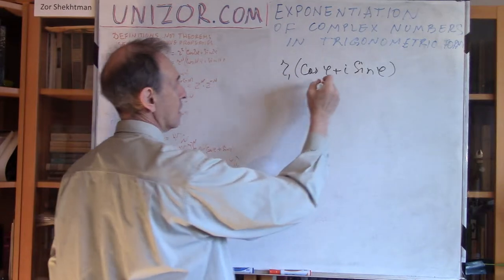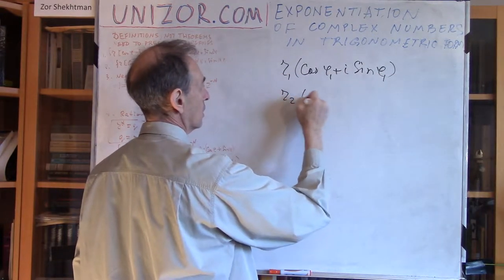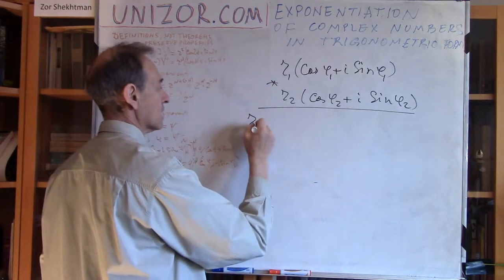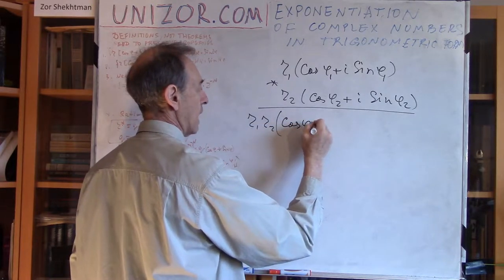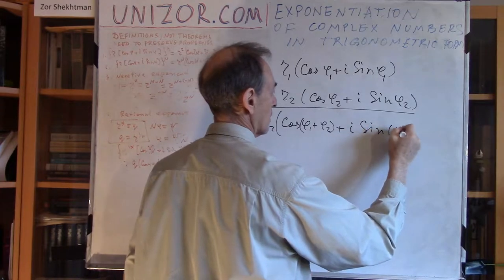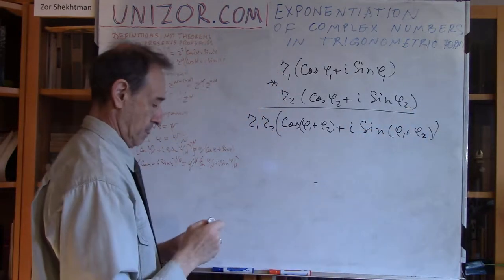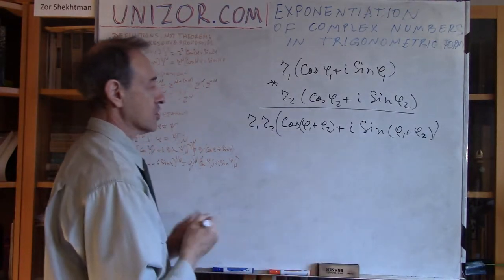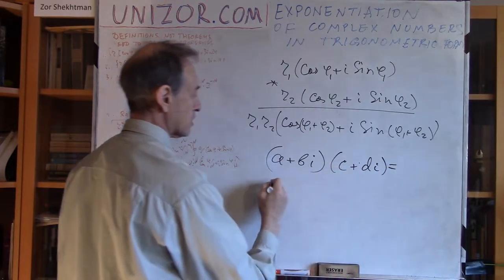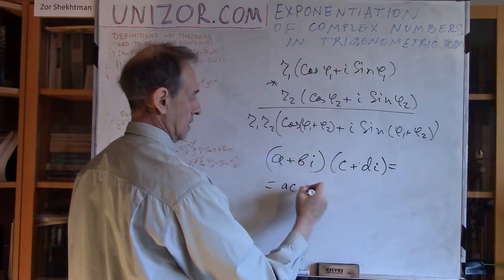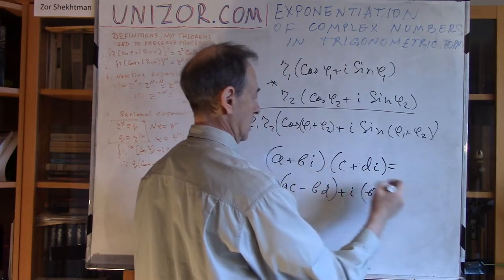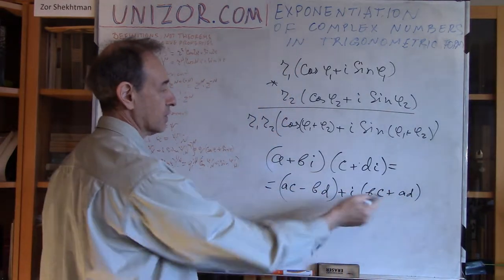Because if you have two different numbers, r1 and r2 — cosine phi2 plus i sine phi2 — their multiplication is very easily expressed in this format. You multiply the moduli and you add the arguments. The analogous formula of multiplication in canonical representation looks much more complex. It's AC minus BD as the real part, and the complex part is BC plus AD. It's a little bit more cumbersome and not easy to remember.